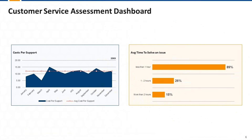Another correlating metric you can use is the costs per support indicator. These costs are determined by the bottom right metric on this dashboard, which tells us the average time taken to solve an issue. The time you spend solving an issue is directly proportional to the cost you incur — the longer it takes, the more it costs your business.